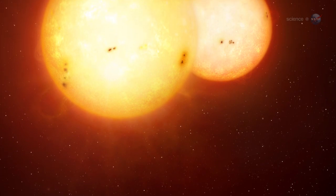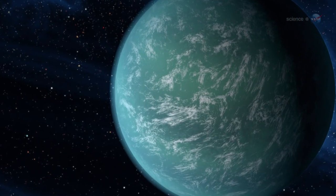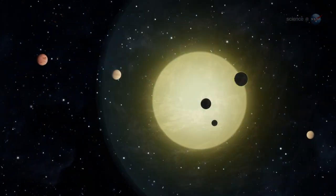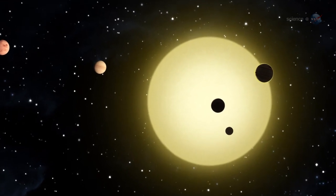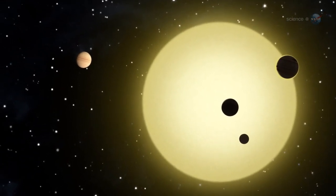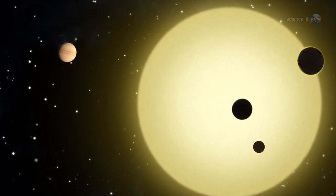Recent finds include planets with double suns, massive super-Earths and hot Jupiters, and a miniature solar system. The variety of planets circling distant suns is as wonderful as it is surprising.